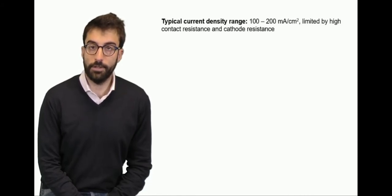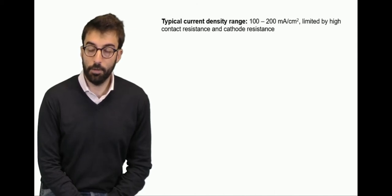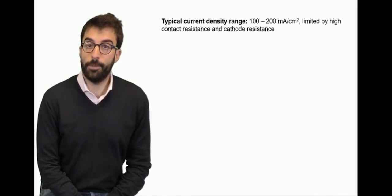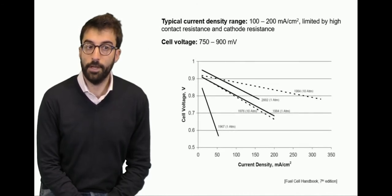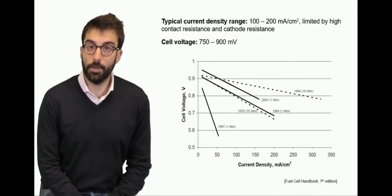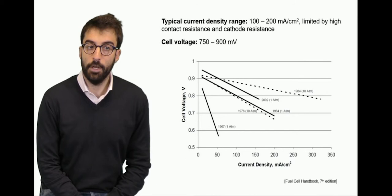Regarding current density that is strictly related to the efficiency of the technology, due to the high resistance losses we may have at high voltage, we usually operate the technology at current density between 100 and 200 milliampere per square centimeter. That corresponds usually to a cell voltage in the range of 700 to 900 millivolts. And these are some examples of polarization curves, voltage function of current density, in which we can see typical current density that can hardly achieve values higher than 300 milliampere per square centimeter.